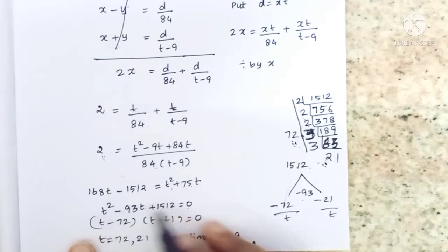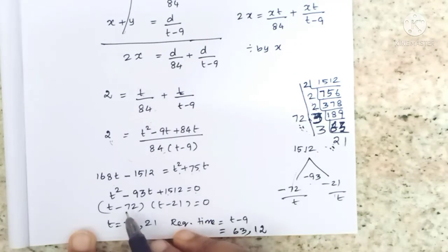So t squared minus 72t minus 21t plus 1512 equals 0. Factoring: t minus 72 times t minus 21 equals 0. Therefore t equals 72 or 21 minutes.